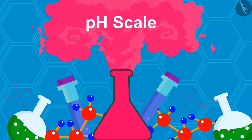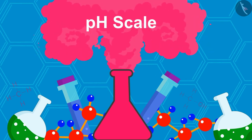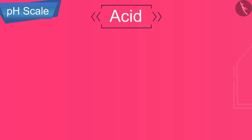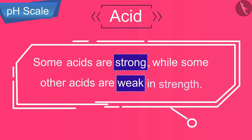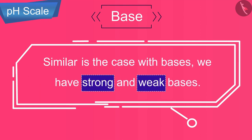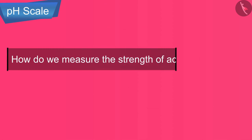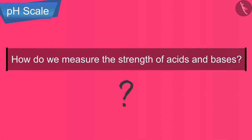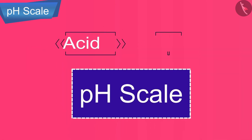Hello friends, welcome to this video session. The topic we are going to cover is the pH scale. Some acids are strong while some are weak, and similarly we have strong and weak bases. We use the pH scale to determine the strength of acids and bases.